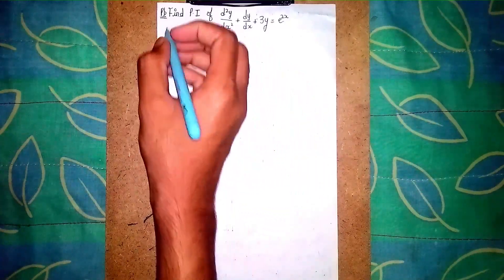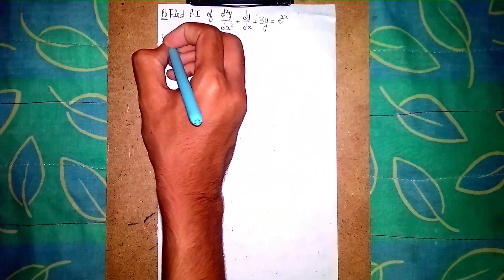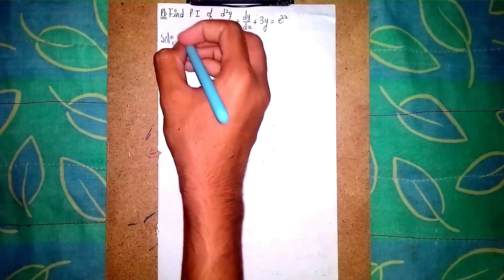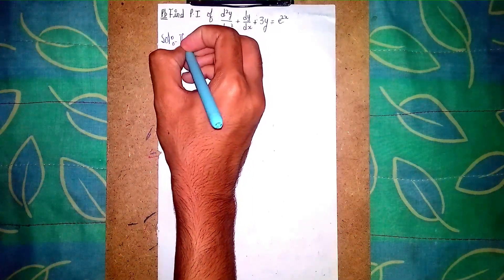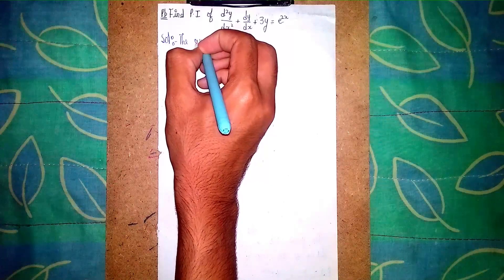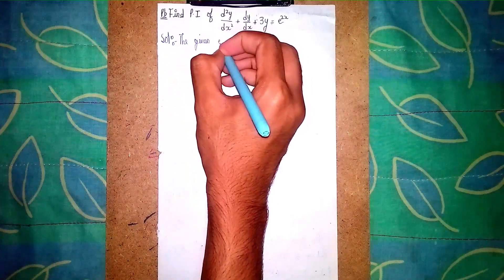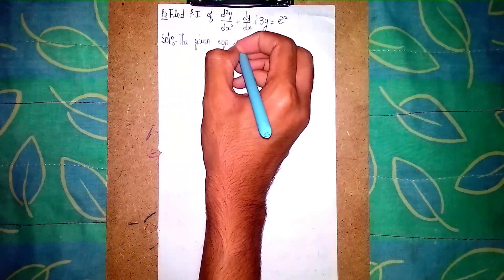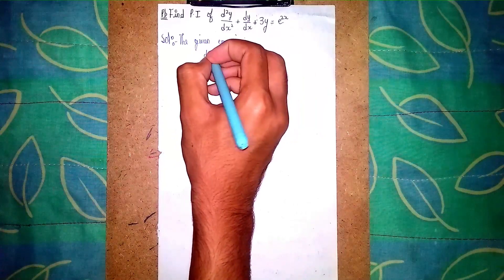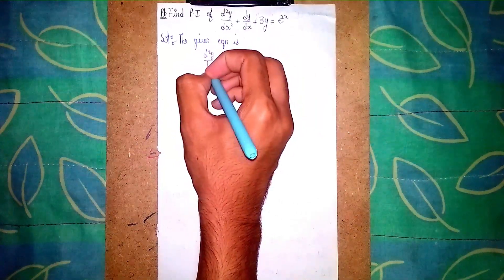So first solution, you can write the given equation. Write the question here first: d²y/dx² + dy/dx + 3y = e^(2x).